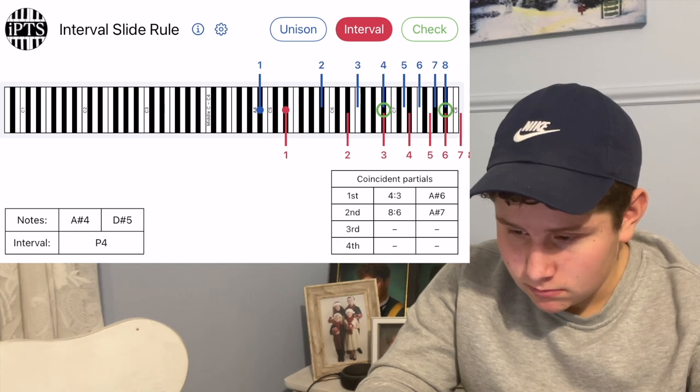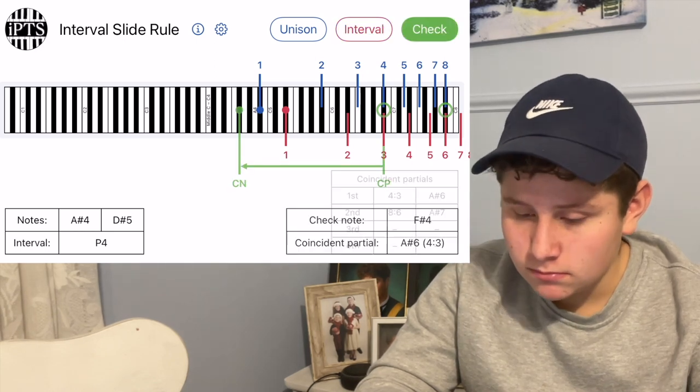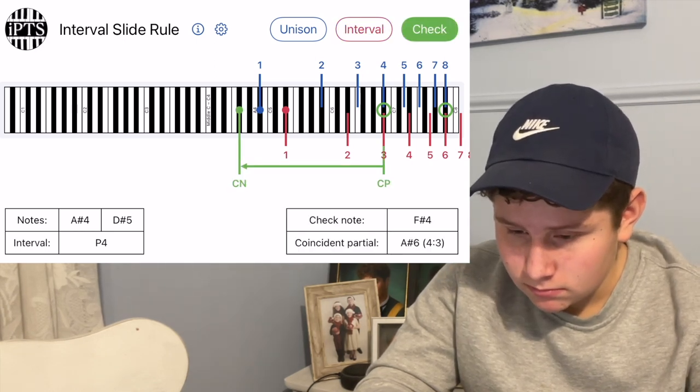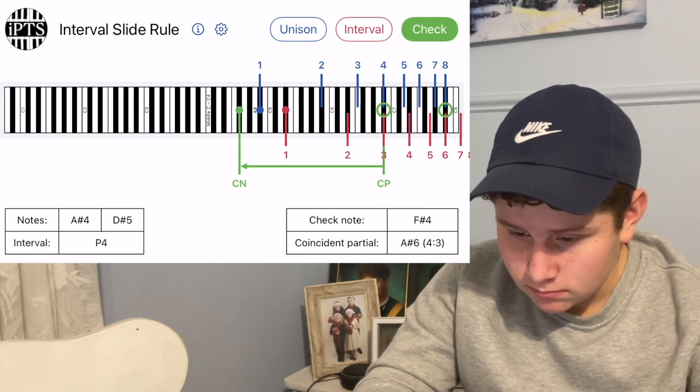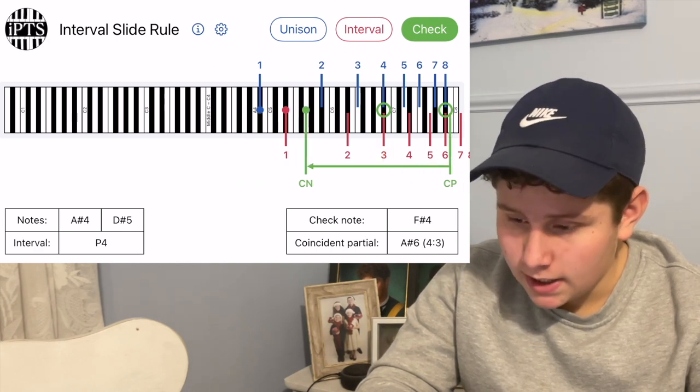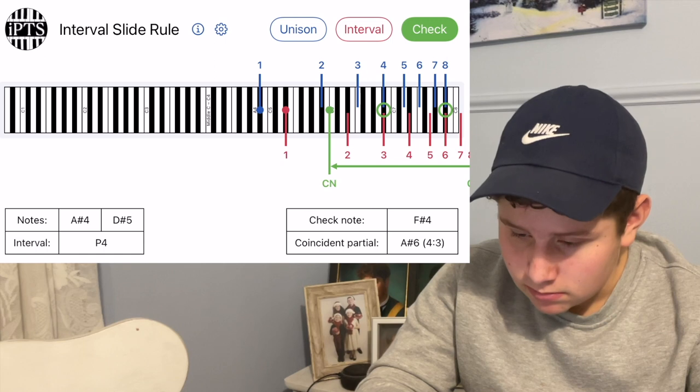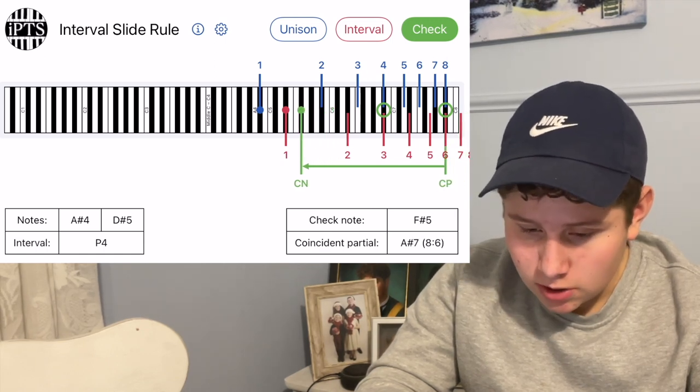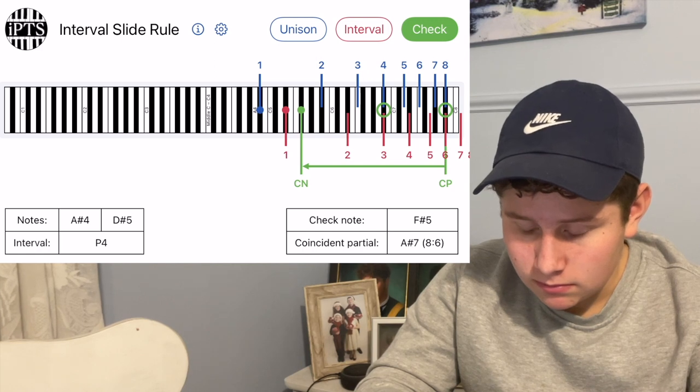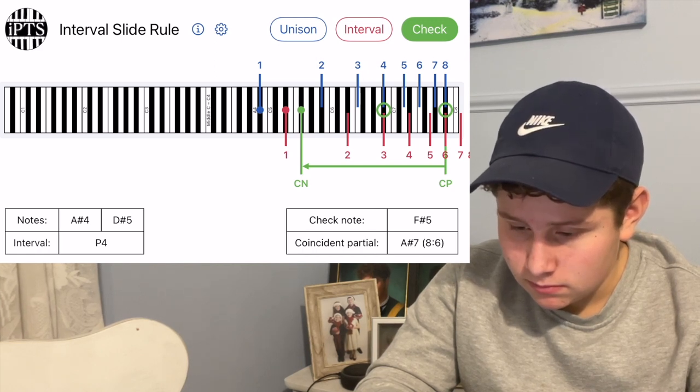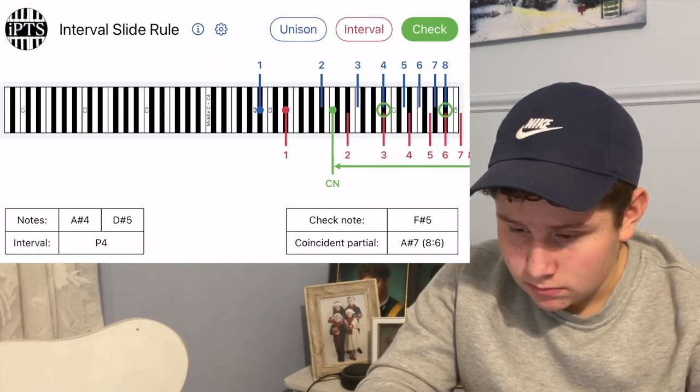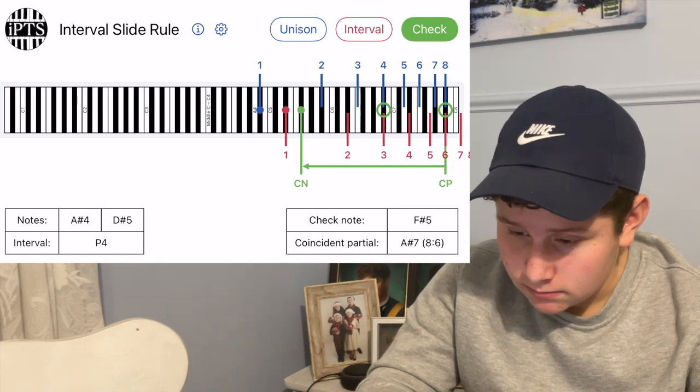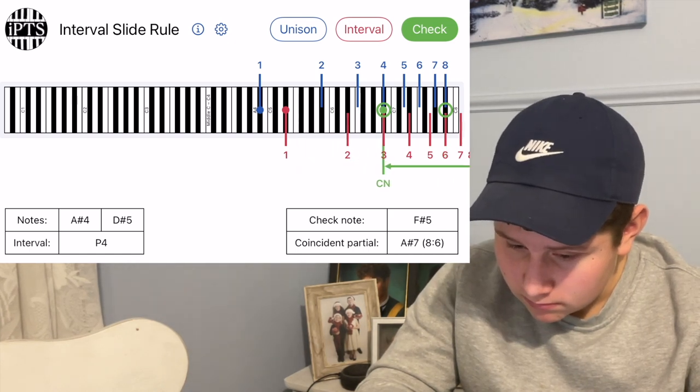Now click on the check note button. Now you're going to have a check note added to those intervals. So slide it around until you get one or two green circles. It already has two green circles. Okay. Is it the P4? Yes. A-sharp. What's the note? A-sharp 4 and D-sharp 5. Nice. Okay, so now slide the check note so that it lines up with the green circle. The 4-3. The first green circle. You see the first green circle? Yes.